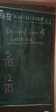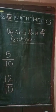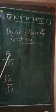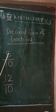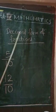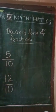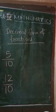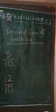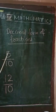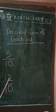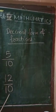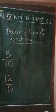Now, we are going to study how to change fractions into decimal form. We know that 5 by 10 is a fraction, and 12 by 10 is also another fraction.